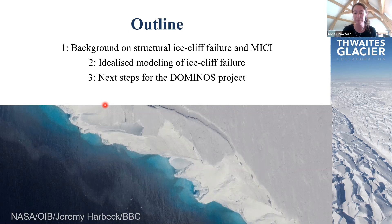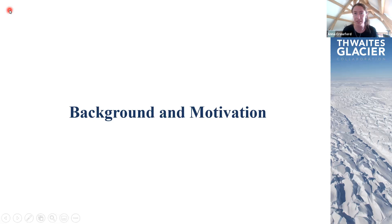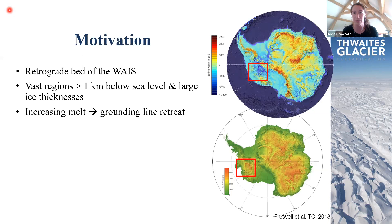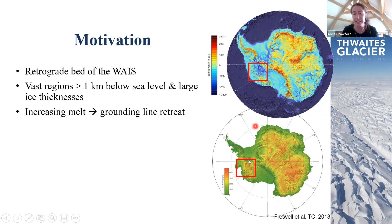I'll start with background and motivation. This group is well aware of the concern for potential rapid retreat from regions of the West Antarctic ice sheet and the consequences for sea level rise. We're particularly worried about outlet glacier grounding lines being pushed into areas situated over retrograde beds, leading into regions of deep basins where the ice is very thick — aspects that link directly into marine ice cliff instability and ice cliff failure processes.